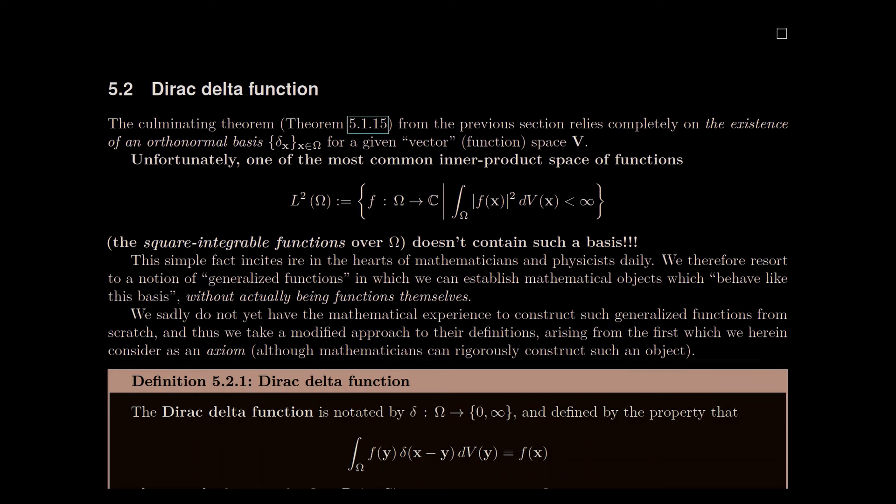Hello and welcome back. We're moving on to section 5.2, called the Dirac delta function. You've probably heard about this from Laplace transforms when you took ODEs, or in other courses. It's named after Paul Dirac, even though some of the work on these functions preceded him — he was the one who made it famous enough in physics to gain his name.